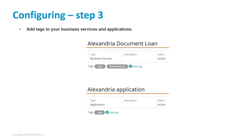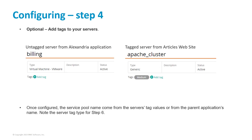The next step is to add tags to your business services, applications, and optionally servers. You can create them manually using the UI, but it's recommended to use a CSV ETL to import them. For the business service, I tagged on importance and instance. For the application, I tagged on importance. For the servers that belong to the application, I did not tag any of them. For the servers that belong to the website, I tagged on importance.